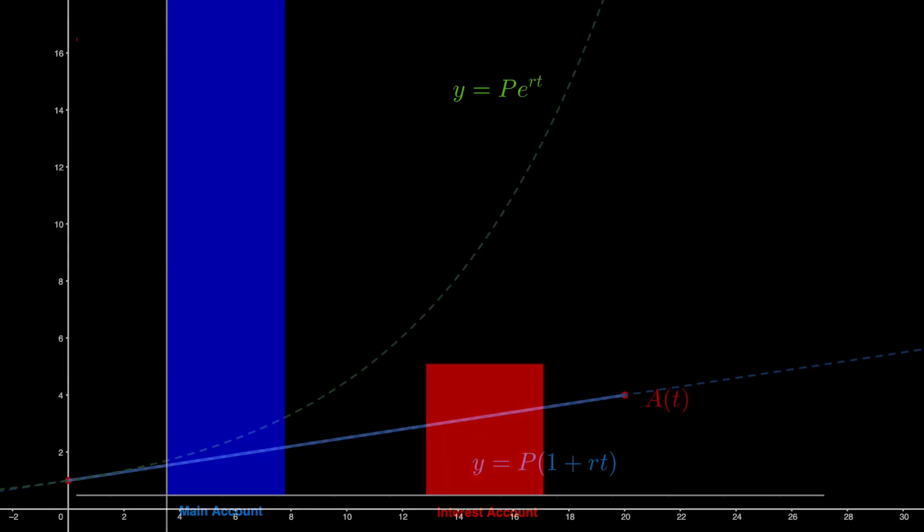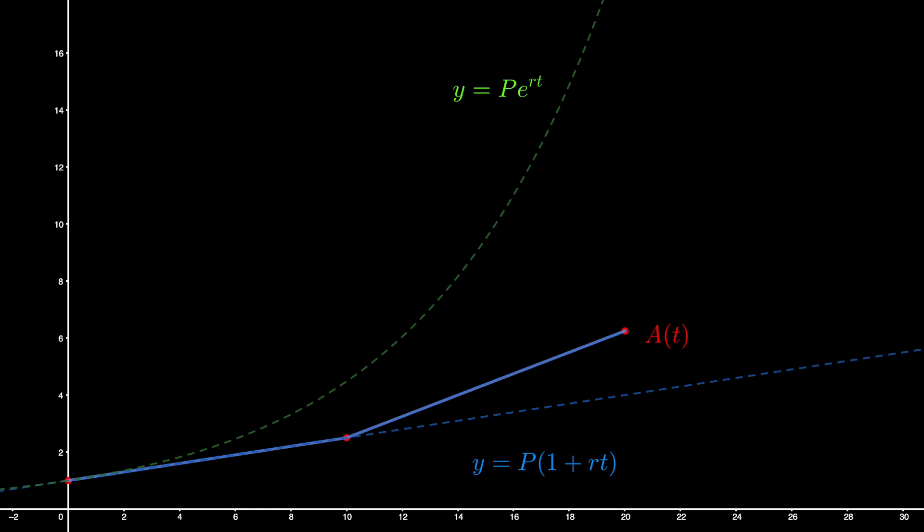One thing you should notice about this solution is that some of the total amount earned was the primary interest on the principal, but some of this was interest on the interest or secondary interest. Some was third-degree interest and so on. But we're not really keeping track of how much interest is primary, secondary, etc.